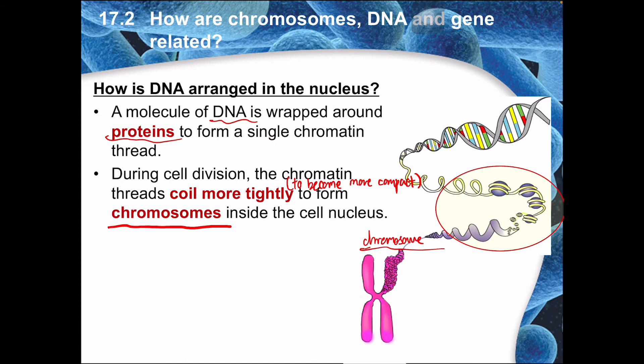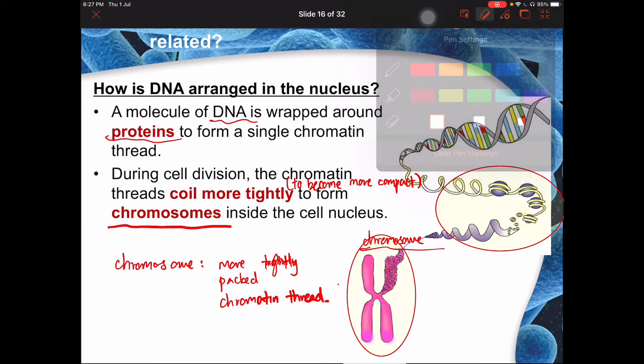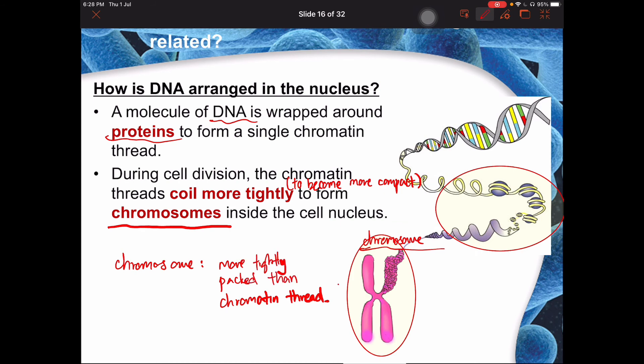Chromosomes are the same thing as chromatin threads, just more packed. It is still a string, but because the cell needs to divide it doesn't want all this string hanging around taking up space. In other words, chromosomes and chromatin threads are actually the same thing — you just have a different way to draw them out.